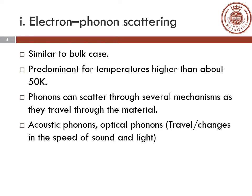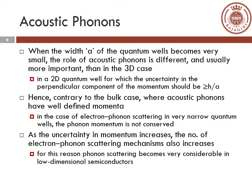Electron-phonon scattering is predominant for temperatures higher than 50 Kelvin. Phonons can scatter through several mechanisms as they travel through the material. We will mainly focus on acoustic phonons and optical phonons. If the width A of a quantum well becomes very small, the role of acoustic phonons is different from the 3D case. In a 2D quantum well, the uncertainty in the perpendicular component of momentum should be greater than or equal to h/a, where h is Planck's constant. Thus phonon momentum is not conserved in very narrow quantum wells, and as uncertainty in momentum increases, the number of electron-phonon scattering events also increases, making phonon scattering very considerable in low dimensional semiconductors.